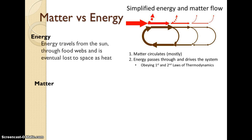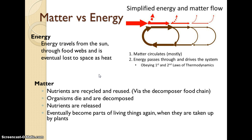When we compare matter and energy: energy travels from the sun through the food webs and is lost as heat — in our diagram, that's shown as the red arrows, degraded at each level. Matter, on the other hand, can circulate. Our nutrients are recycled and reused; decomposers in the food chain cycle those nutrients back into the soil, and they eventually become parts of living things again when taken up by plants. When we look at the nitrogen cycle, carbon cycle, oxygen, sulfur, and phosphorus cycles, we'll see how these types of matter are all recycled.